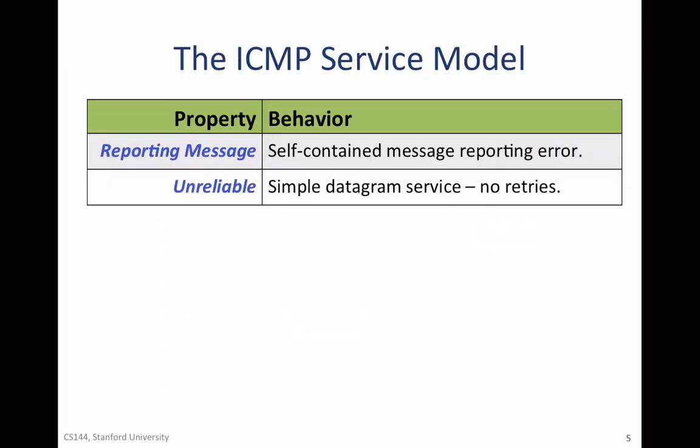The ICMP service model is very simple. It allows sending a self-contained reporting message about the error. It's unreliable in the sense that it sends a simple datagram — it doesn't attempt to resend it, and it doesn't maintain any state of the messages it sent. It simply sends back a digest giving an indication of what the problem was.